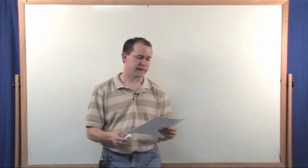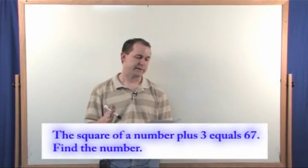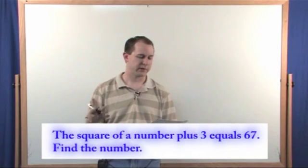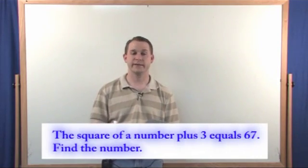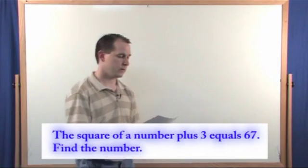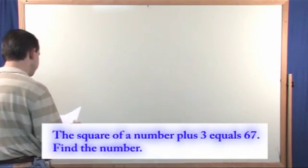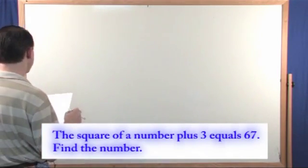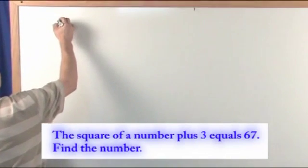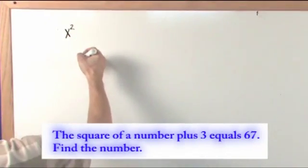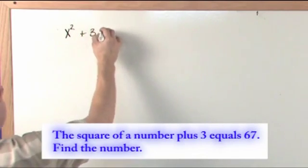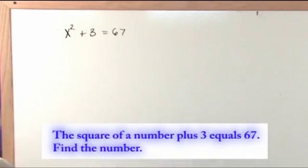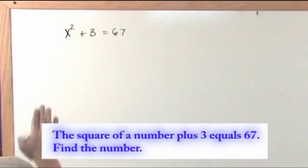So the first problem would say something like, the square of a number plus three equals 67. Find the number. The first step is just to translate the words to what we're trying to deal with. The square of a number, so x is our number, the square of a number plus three is equal to 67. That's how we write that down mathematically.